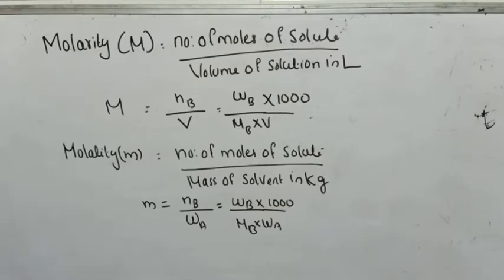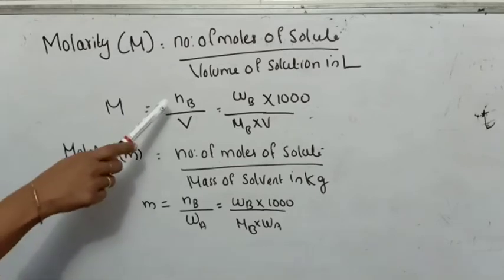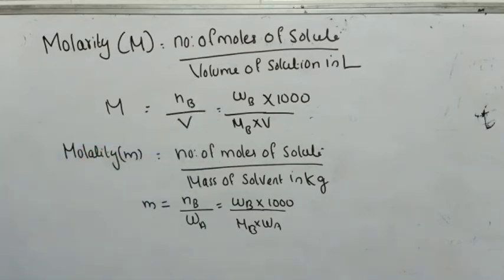Molarity is expressed in capital letter M. It is equal to number of moles of solute by volume of solution in liters. So capital M is equal to number of moles of solute, expressed as NB, by volume expressed as V. NB, the number of moles of solute, is equal to mass divided by molar mass — given mass is WB and molar mass is MB — so NB can be written as WB by MB.